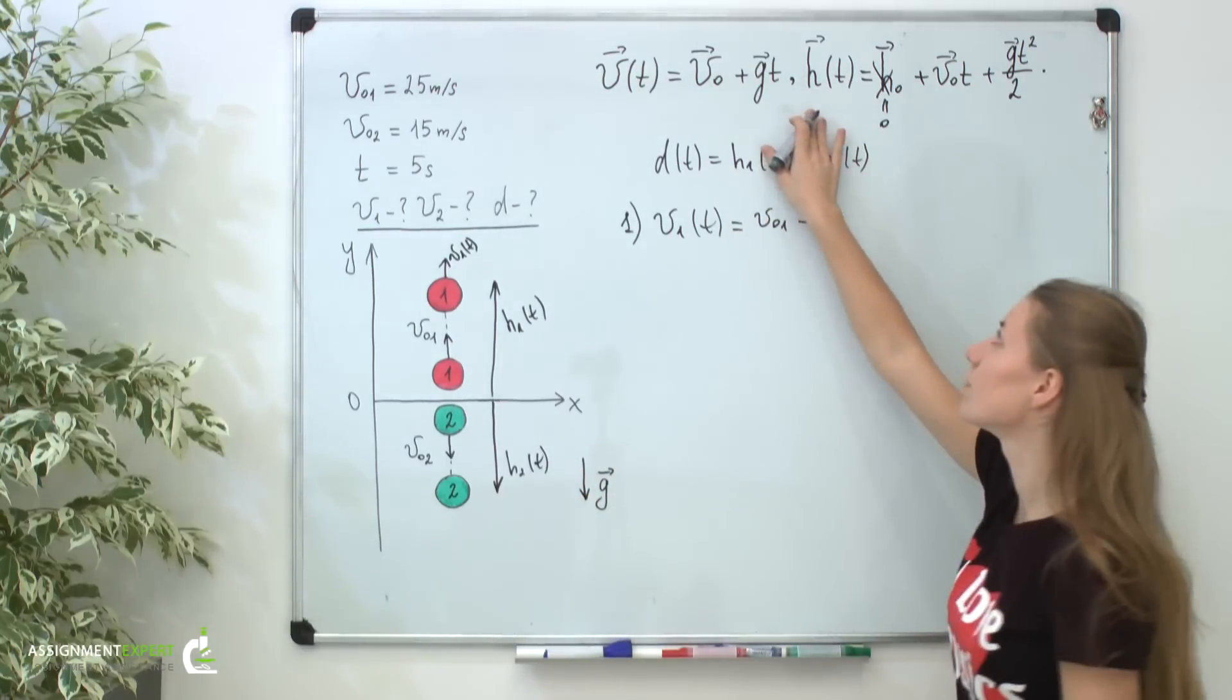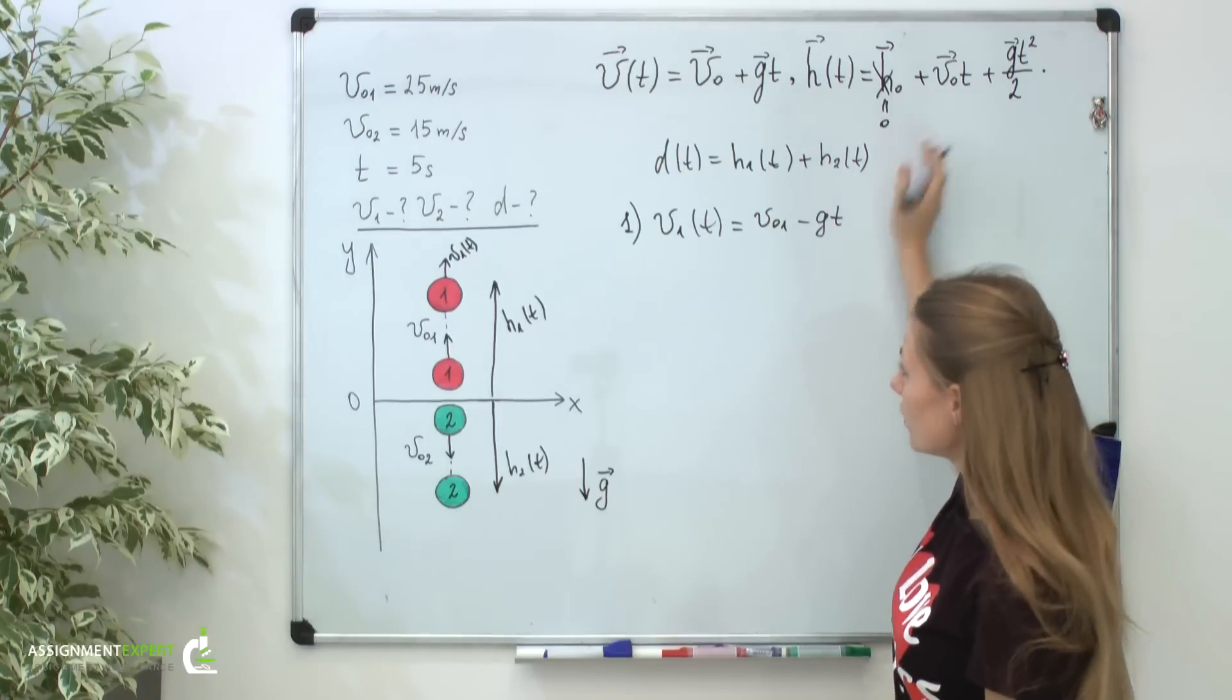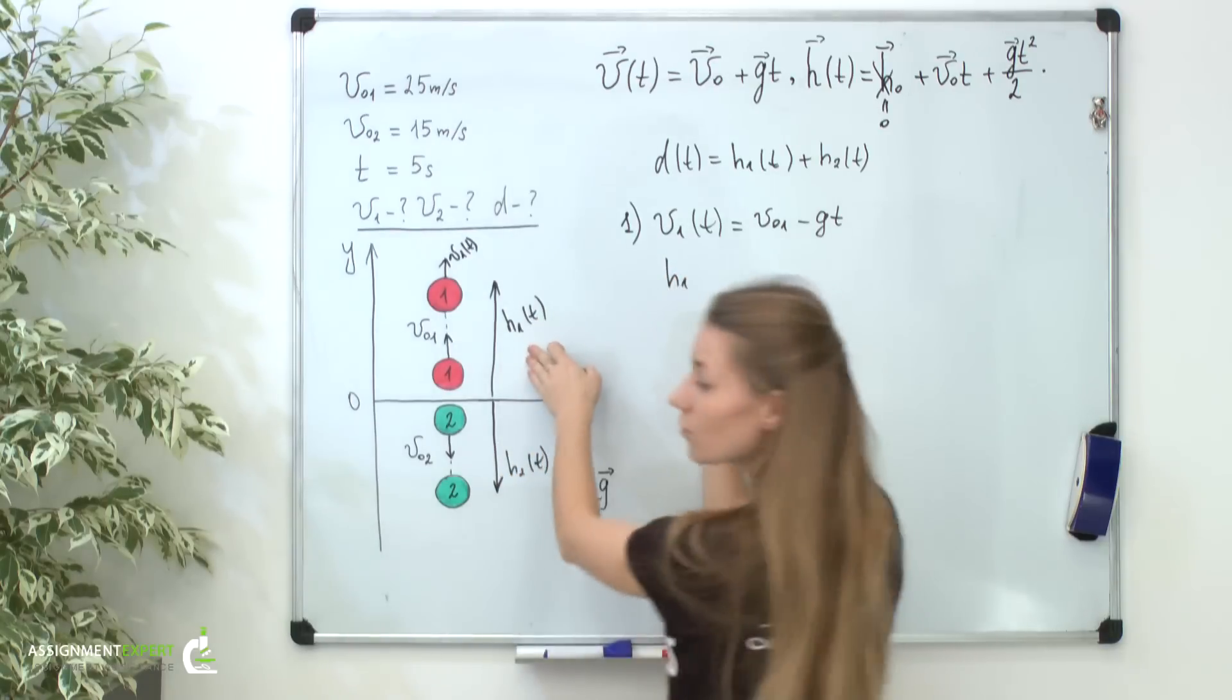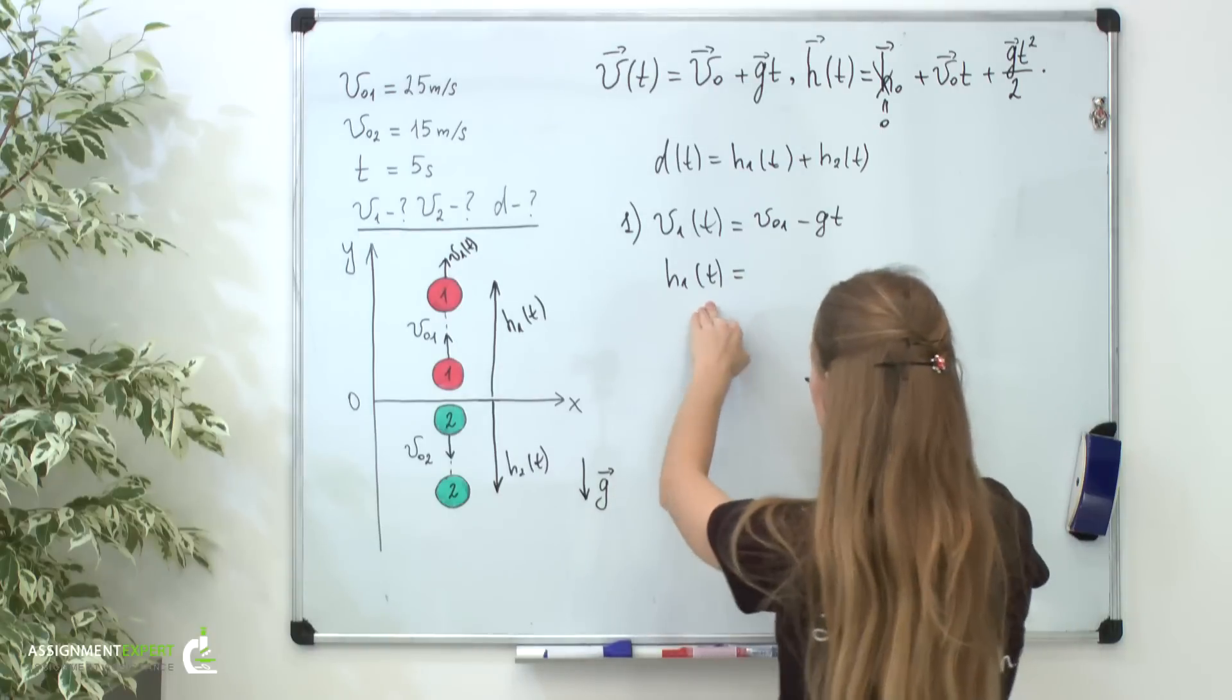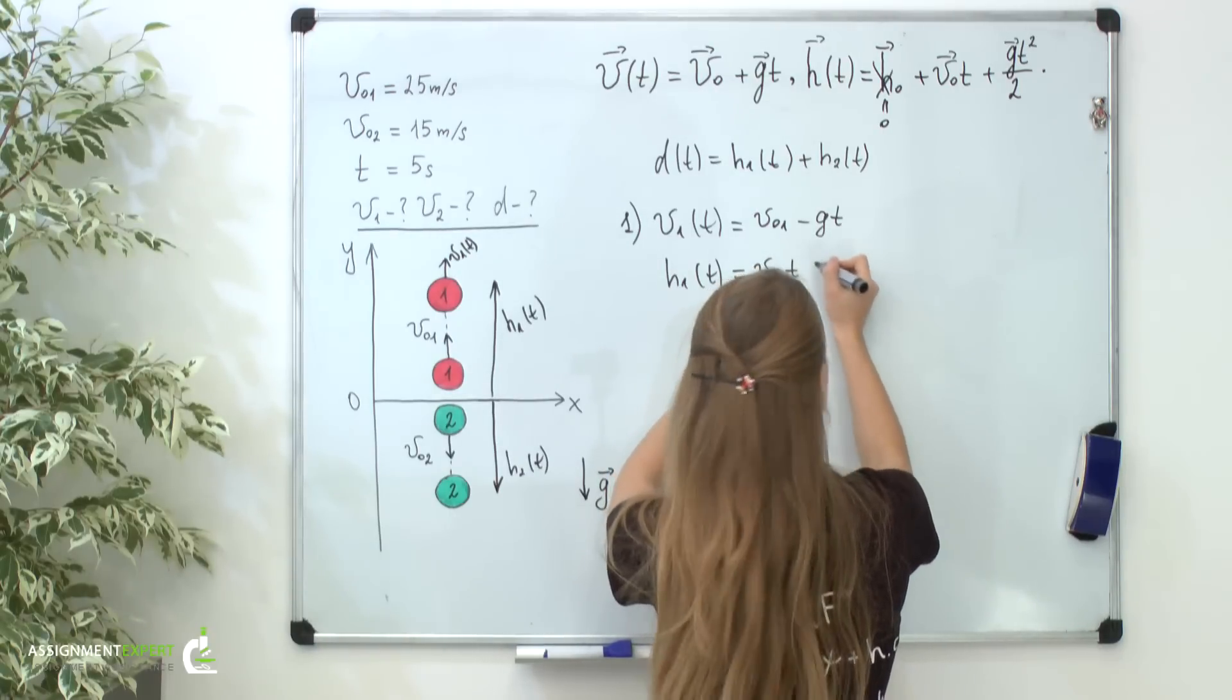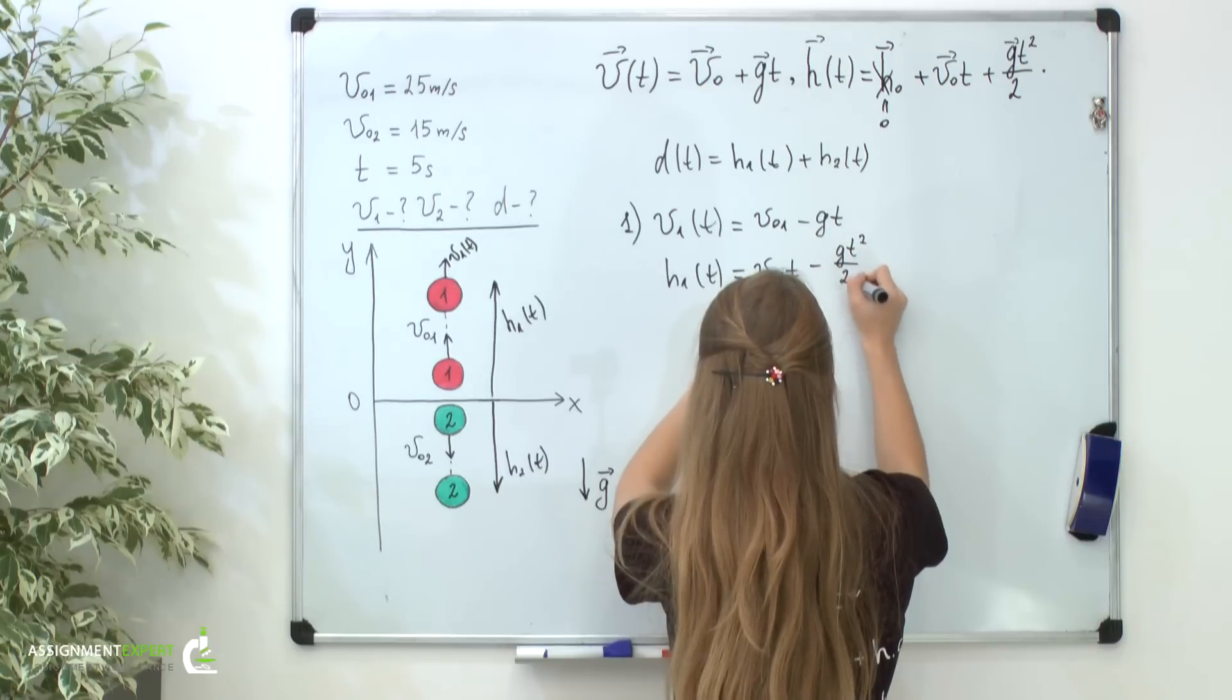Similarly, you can see that the equation for the distance consists of the same terms. So, it is easy to write down the equation for the distance. Suppose, of course, that h1 of t is positive: h1 of t equals v01t minus gt squared divided by 2.